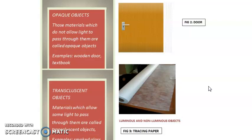There are basically three types of non-luminous object. First one was transparent object, second is opaque object, third is translucent object. Transparent object we have seen last video, today we have seen opaque object.